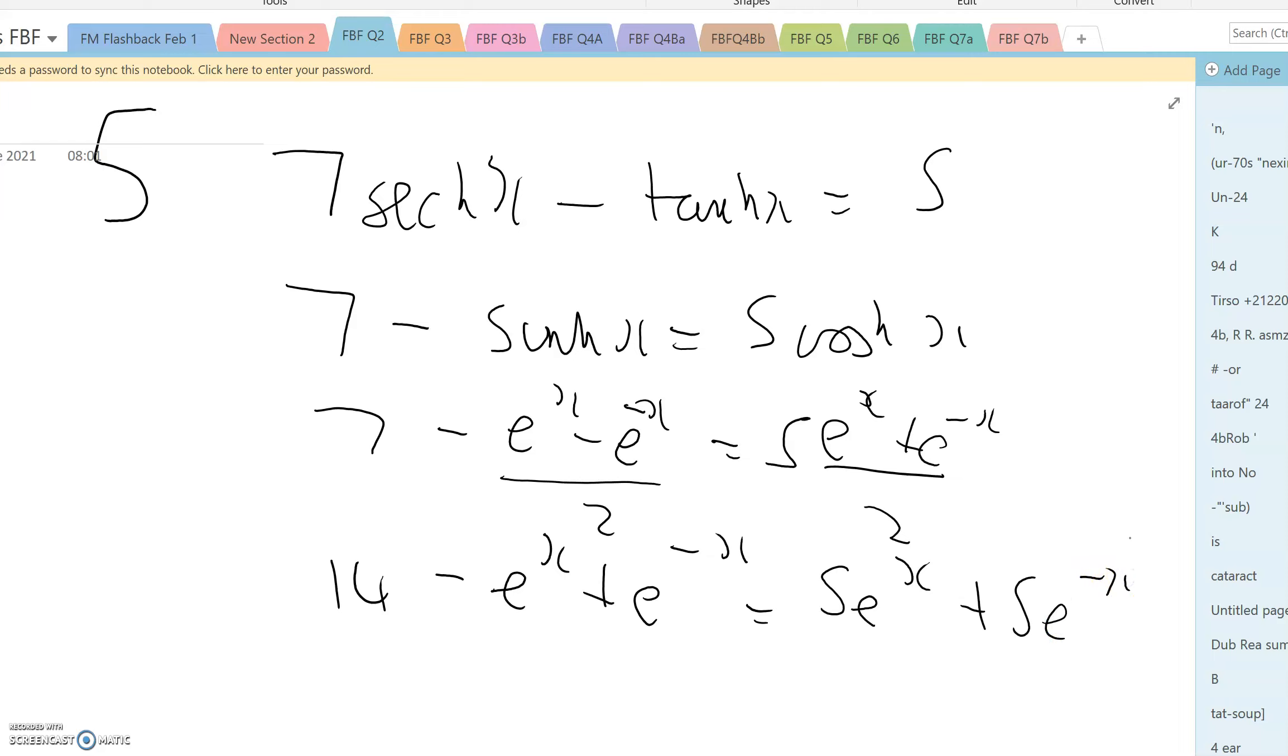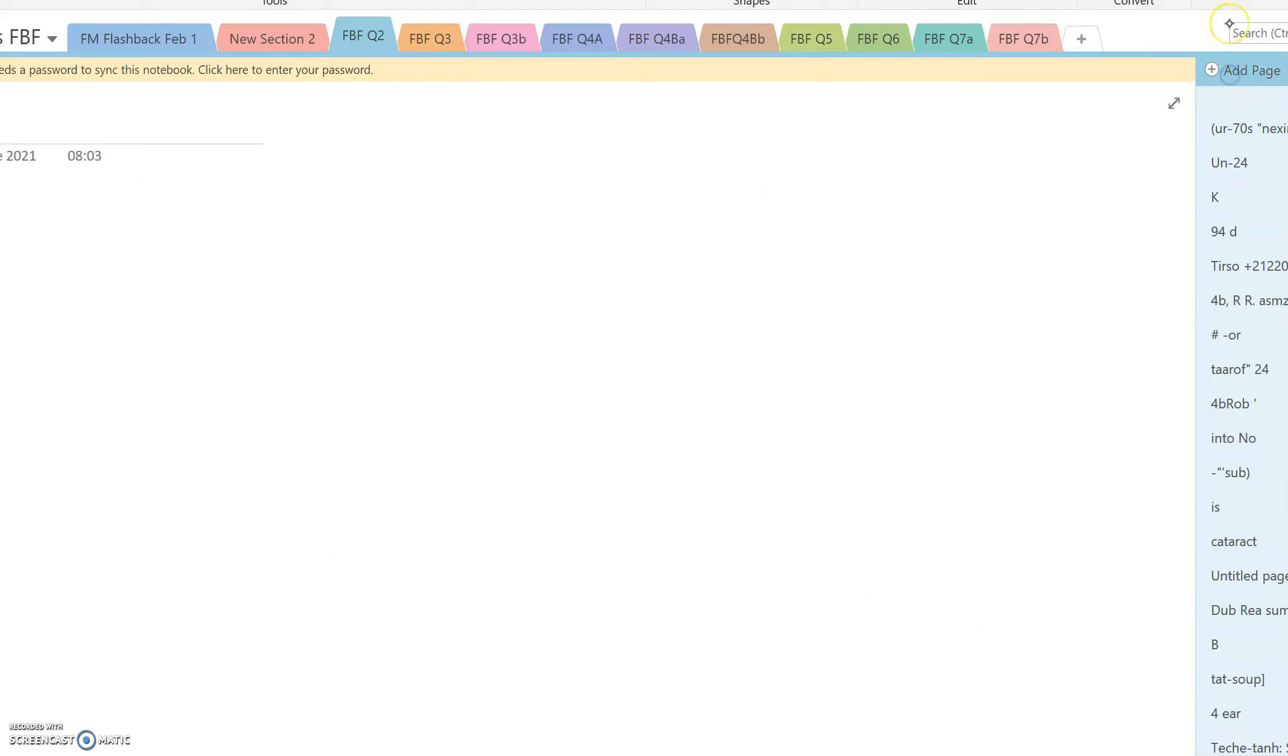Collecting like terms, this should give us 6 e to the x minus 14 plus 4 e to the minus x equals 0.